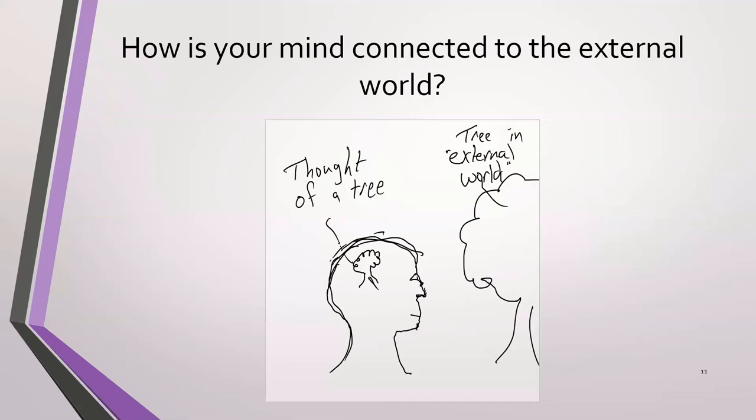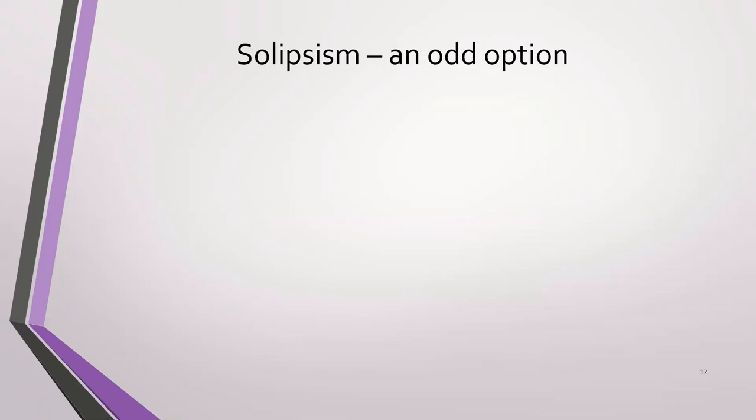So we have this idea where there's a tree in the external world on the right side here, and we have a thought of a tree that's within our mind. And yes, go ahead and marvel at the artwork here. So the question is, how is your mind connected to the external world? How does this happen?